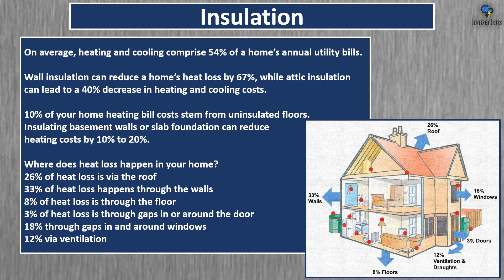On average, heating and cooling compromise 54% of a home's annual utility bills. Wall insulation can reduce a home's heat loss by 67%, while attic insulation can lead to a 40% decrease in heating and cooling costs. 10% of your home's heating bill stems from uninsulated floors. Insulating basement walls or slab foundation can reduce heating costs by 10–20%. Heat loss breakdown: 26% via the roof, 33% through the walls, 8% through the floor, 3% through gaps around doors, 18% through gaps around windows, and 12% via ventilation.